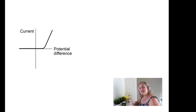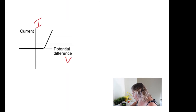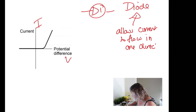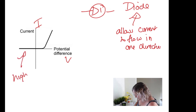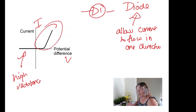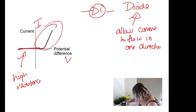The next graph shape you need to know is for a diode. Remember this is the symbol for a diode. A diode only allows current to flow in one direction. It has really high resistance in one direction so the current can only flow in the positive direction — which is why the graph only has a line on that side. On the other side the line is flat because of such high resistance.